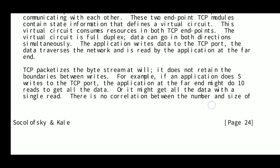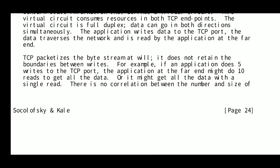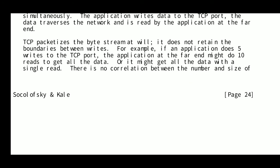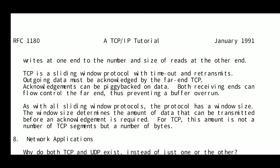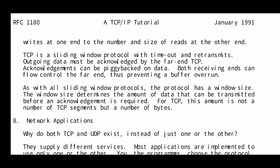The application writes data to the TCP port, the data traverses the network, and is read by the application at the other host via the TCP port. TCP packages the byte stream as it sees fit — it does not retain the boundaries between writes. For example, if an application does 5 writes to a TCP port, the application at the far end might do 10 reads or get all the data with a single read. There is no correlation between the number and size of writes at one end and reads at the other, unlike UDP.